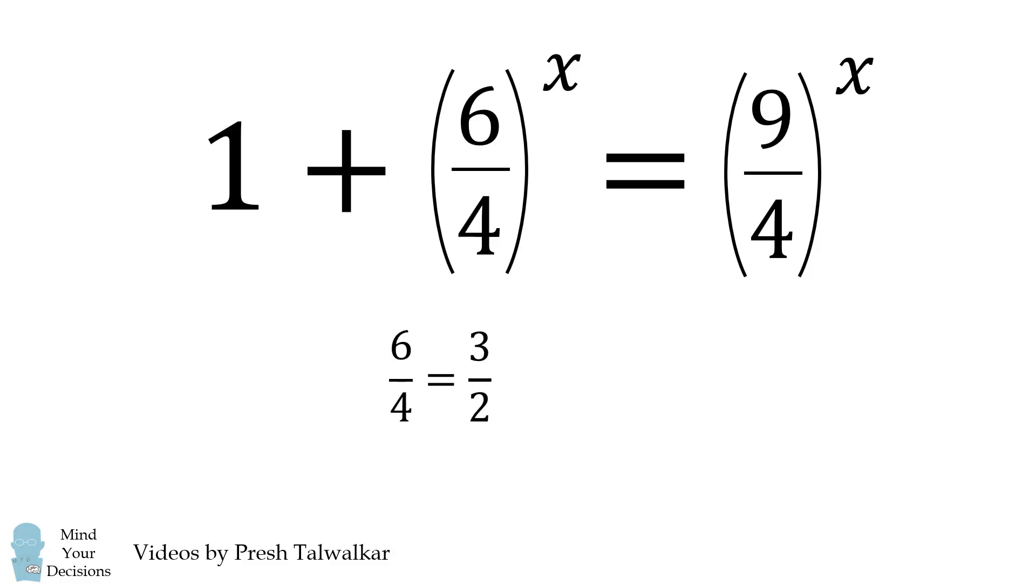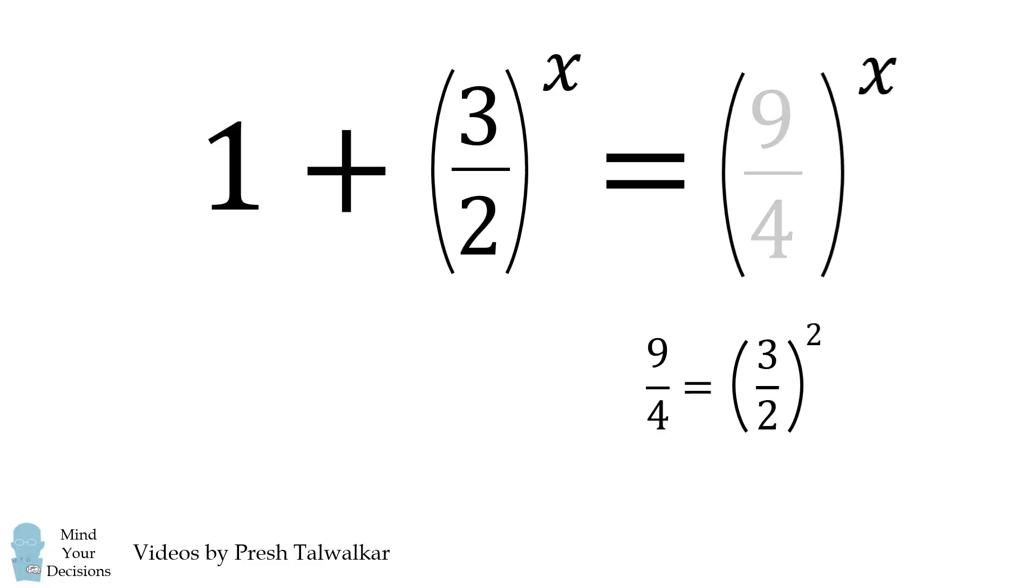6 over 4 is equal to 3 over 2, and we'll substitute that in. 9 over 4 is equal to 3 over 2 the quantity squared. And we'll substitute that in.